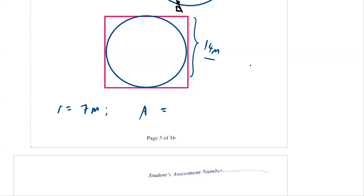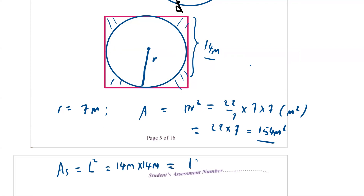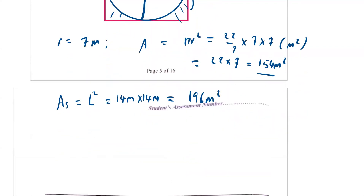So what will be the area? With radius r, we know that area is π r². The area of the circular carpet is 22/7 × 7 × 7. Simplifying by 7, you have 22 × 7, which is 154 metre squared. Then we are supposed to find the area of the remaining part, so we find the area of the square, which is length squared: 14 × 14 = 196 metre squared.